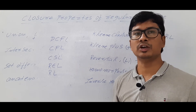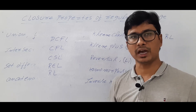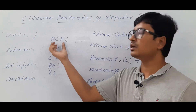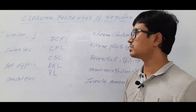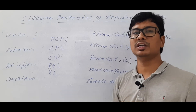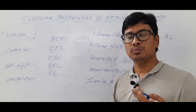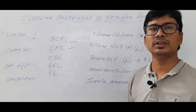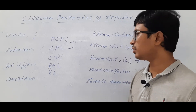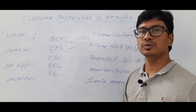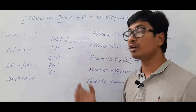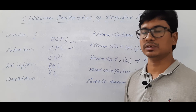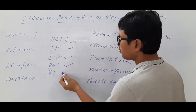We discussed that non-deterministic pushdown automata is more powerful than deterministic pushdown automata. For any language if you have a deterministic pushdown automata, we call it a deterministic context-free language. If a non-deterministic pushdown automata is there, we call it a context-free language. Context-sensitive languages are represented using a linear bounded automata. Recursive enumerable languages are those for which you have a Turing machine whether halting or non-halting. Recursive languages are those for which you have a halting Turing machine.